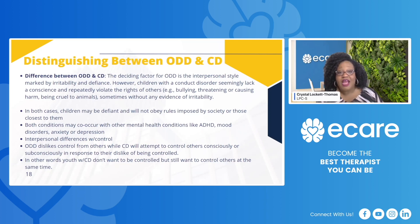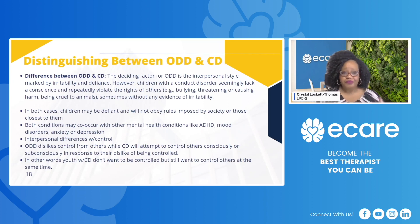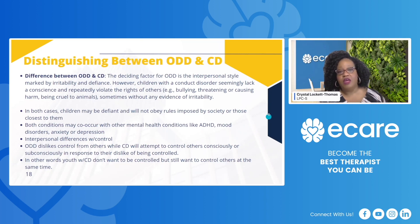If I want ice cream and you tell me no, I'm going to sneak it and go to my room — that's ODD. But with conduct disorder, it's going to be about controlling that person within their environment. Youth with conduct disorder don't want to be controlled, but they still want to control others at the same time. Those are some indicators you can look into or think about.